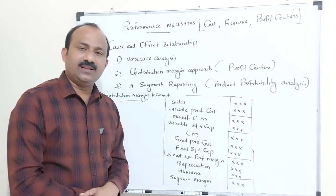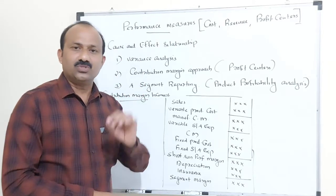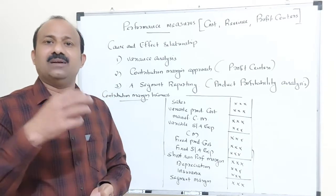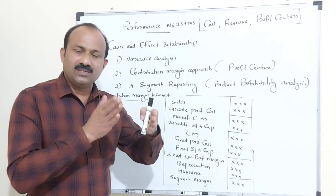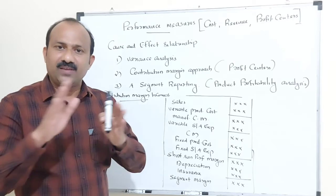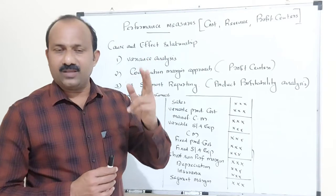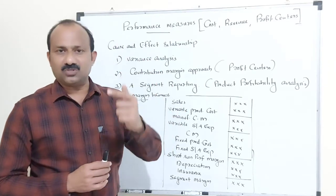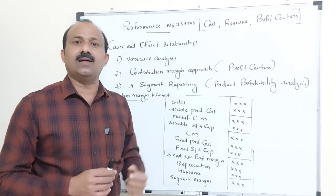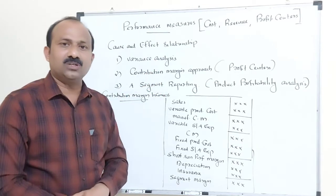Variance analysis is the most important technique used by organizations to analyze actual versus budgeted figures. Sometimes there is a difference between budgeted and actual results. Variances include material variance, labor variance, overhead variance, fixed cost variance, and variable overhead variance — many types of variance analysis can be performed using this technique.